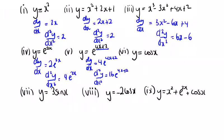y is equal to cos x, dy dx is going to be minus sin x. And now we're differentiating minus sin x. Sin x goes to cos, so minus sin x goes to minus cos x, so d squared y dx squared is going to be minus cos x.